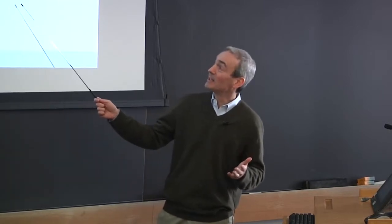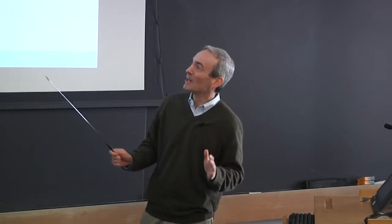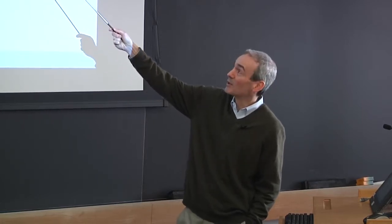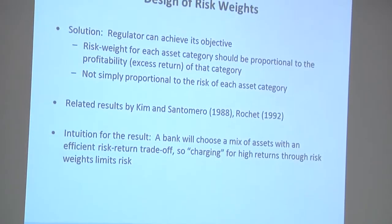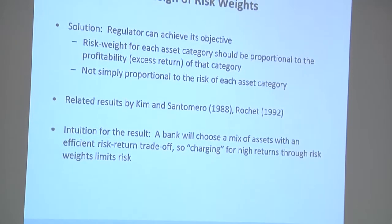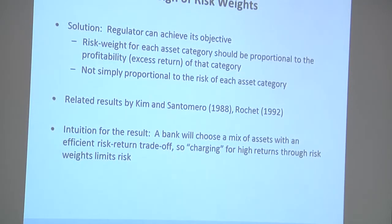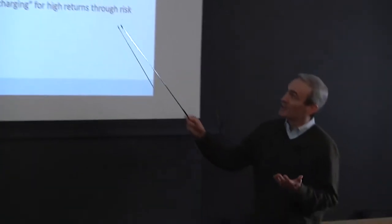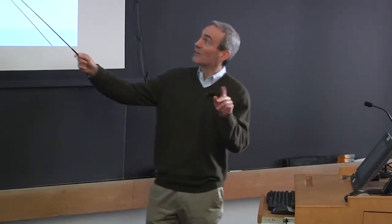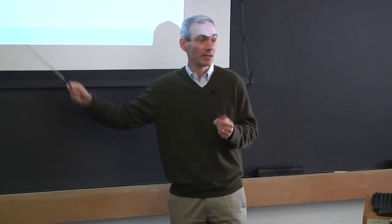Now, we could say that we have a public policy objective that we need to have more loans to farmers, but that would be, you know, in some sense that would be a different question. So, it's just in terms that shouldn't really be the objective in designing the risk weights for the risk weighting scheme. So, if you make those two assumptions and, you know, you can read the paper if you want to go through all the details. We show that the regulator can, in fact, achieve this objective if it makes the risk weight for each category proportional, as I said, to the profitability of that asset category and not simply to the risk of each asset category. In fact, making risk weights proportional to the risk of an asset category is the wrong answer. Because you will actually, it's wrong in the sense that you will end up distorting the relative mix of different kinds of assets. And our premise is that that's not what you're trying to achieve. Trying to control the overall limit of risk, but you're not trying to push banks to do more of one kind of lending and less of another kind of lending. This is actually consistent with some earlier work. And the intuition is that a bank will choose a mix of assets with an efficient risk return trade-off. So, charging for high returns through risk weights has the net effect of limiting the overall risk that the bank takes.